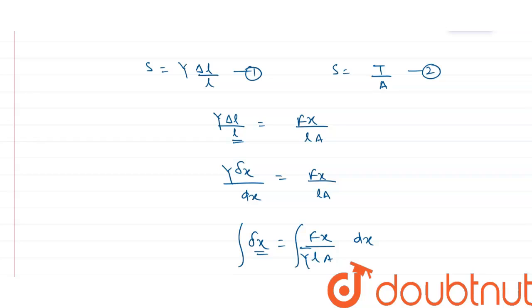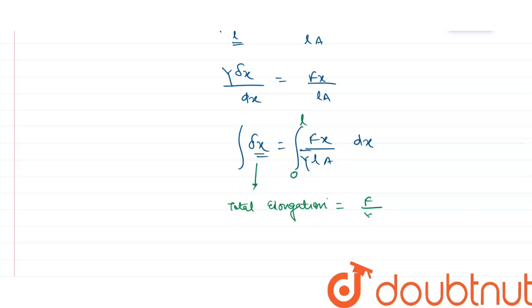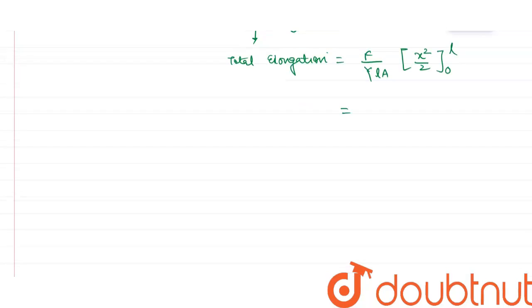Integrating this equation gives the total elongation in the block. Total elongation equals the integral from 0 to l of (f / (y·l·a)) · x dx. Since f/(y·l·a) is constant, we integrate x to get x²/2, evaluated from 0 to l. After putting in the limits, total elongation = (f/(y·l·a)) × (l²/2). One factor of l cancels, giving total elongation = fl / (2·y·a).